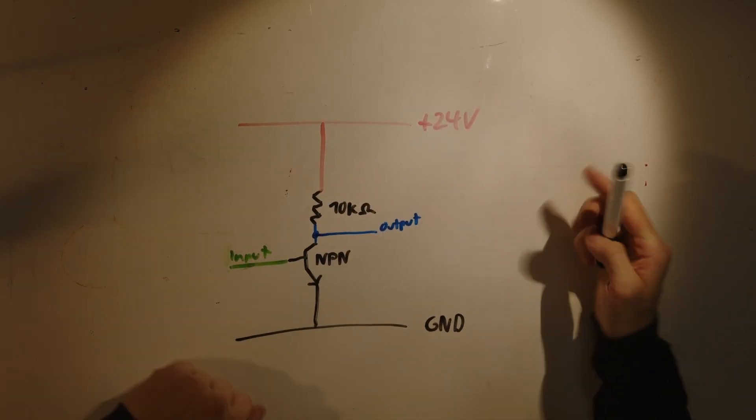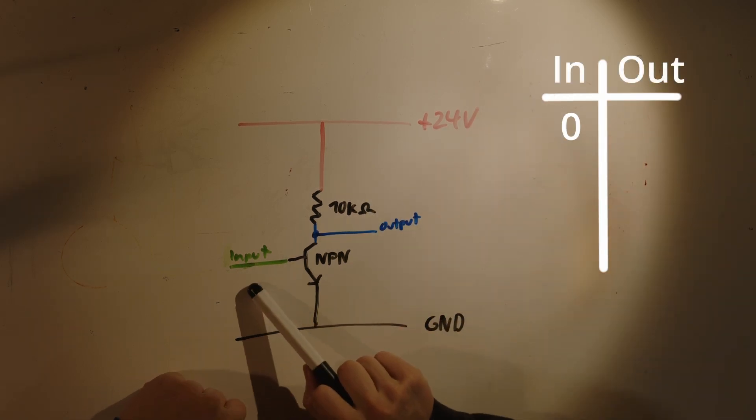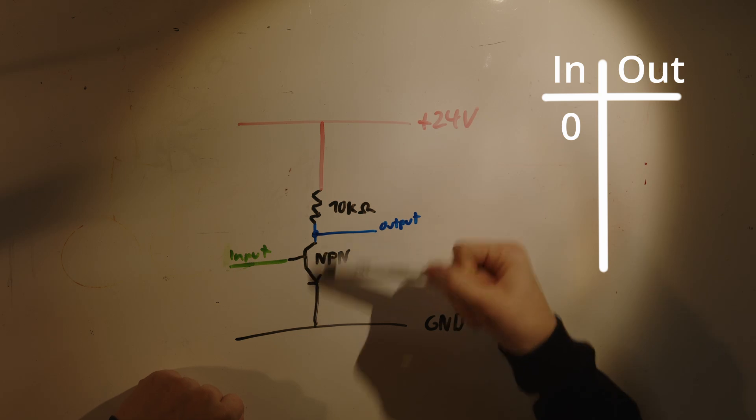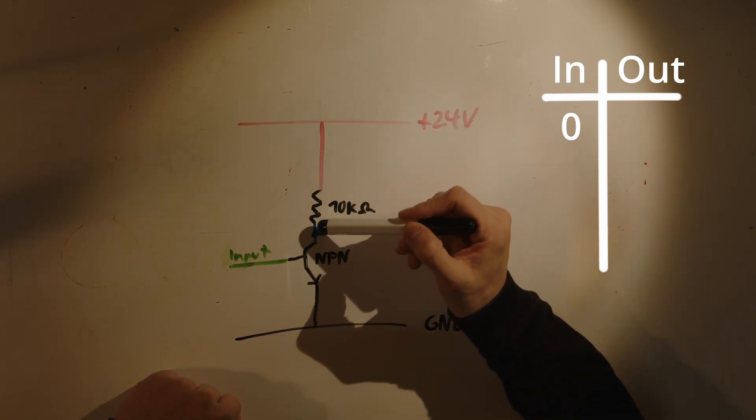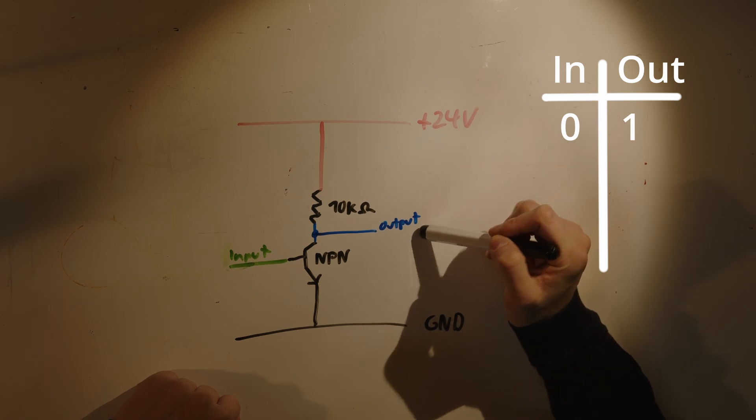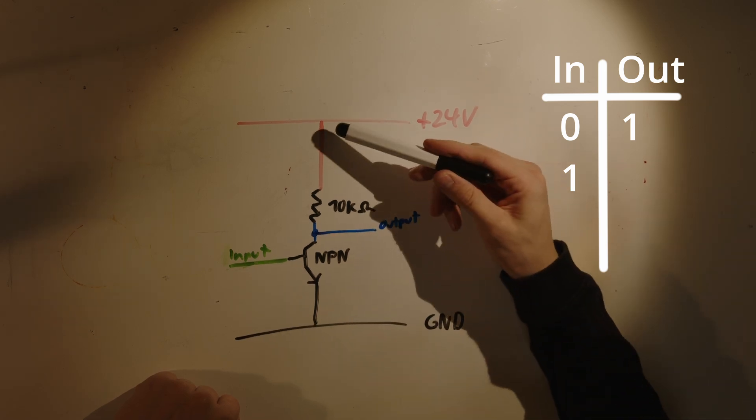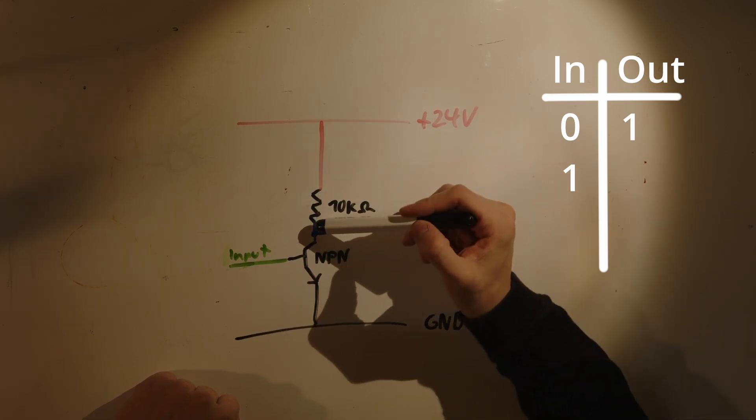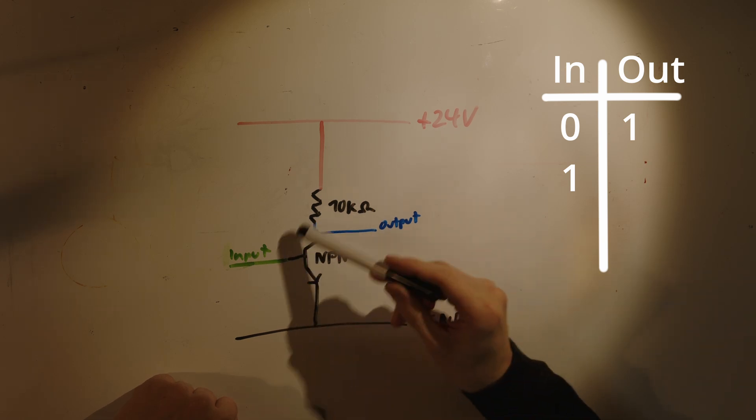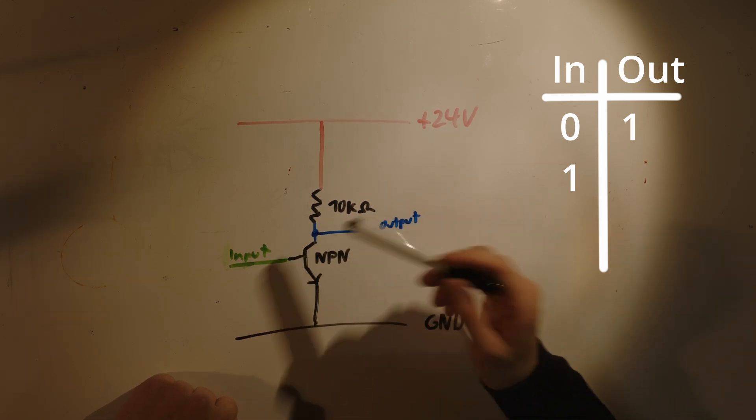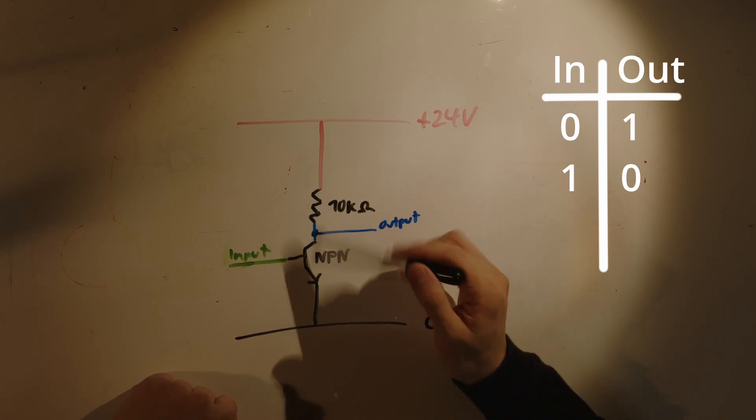So the NOT gate is fairly simple. You have 24 volts coming in. If the input is at zero the transistor doesn't conduct so the current flows from the 24 volts through the 10 kilo ohm resistor to the output. If the input goes to one the transistor starts to conduct. The electricity goes through the resistor through the transistor to ground and so this potential here gets ripped down to pretty much ground.